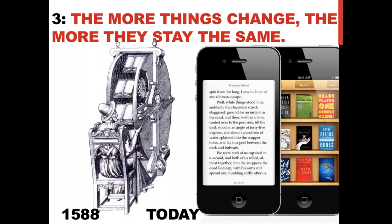The third point goes back to our book wheel, invented in 1588: the more things change, the more they stay the same. We had this idea of wanting access to many books at the same time — and today on my iPhone I have that. I've got a whole library on my iPhone and on my Kobo or Kindle. The technology has changed, but the desire has stayed the same: access to information. What's changed through technology is the way in which we access that information.